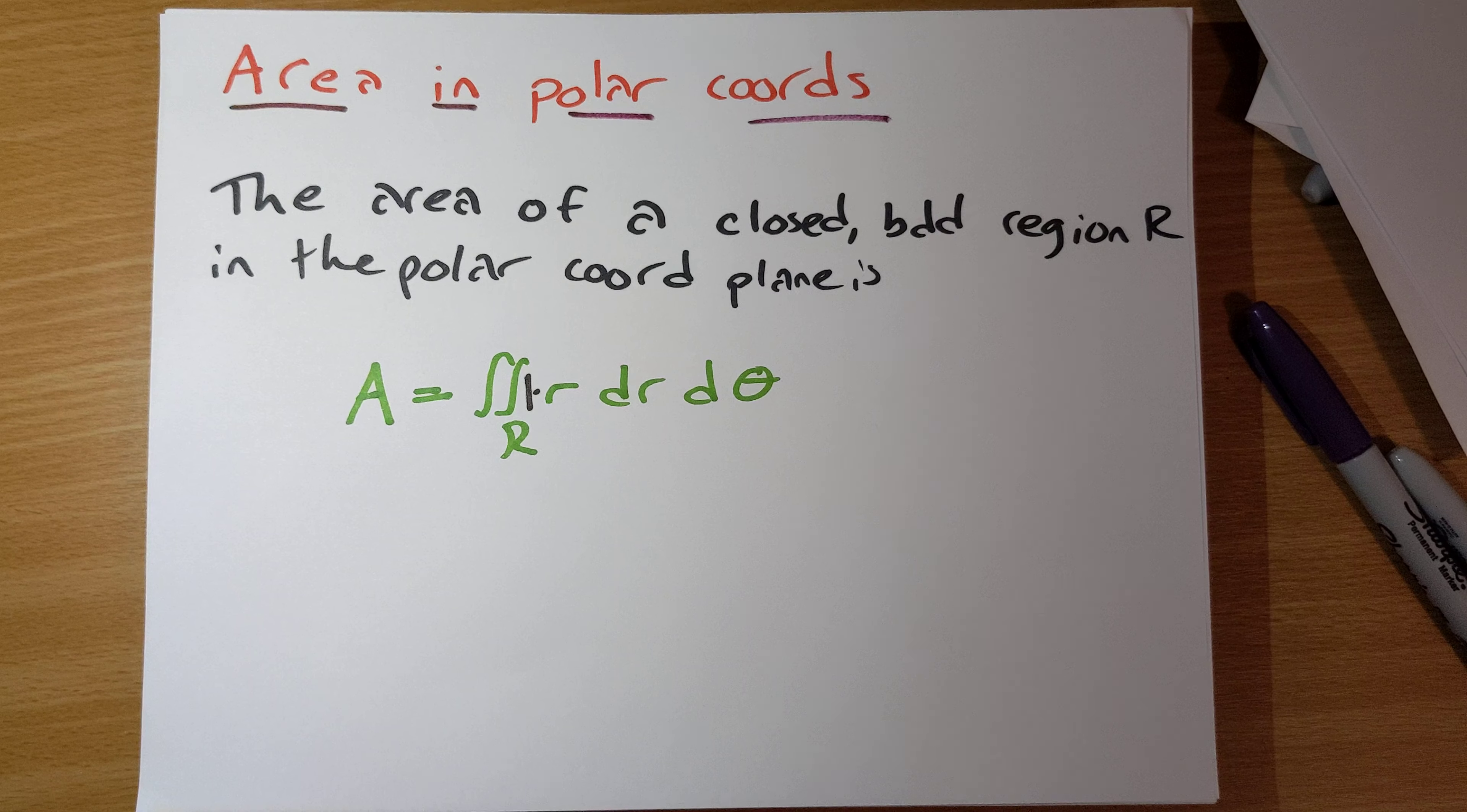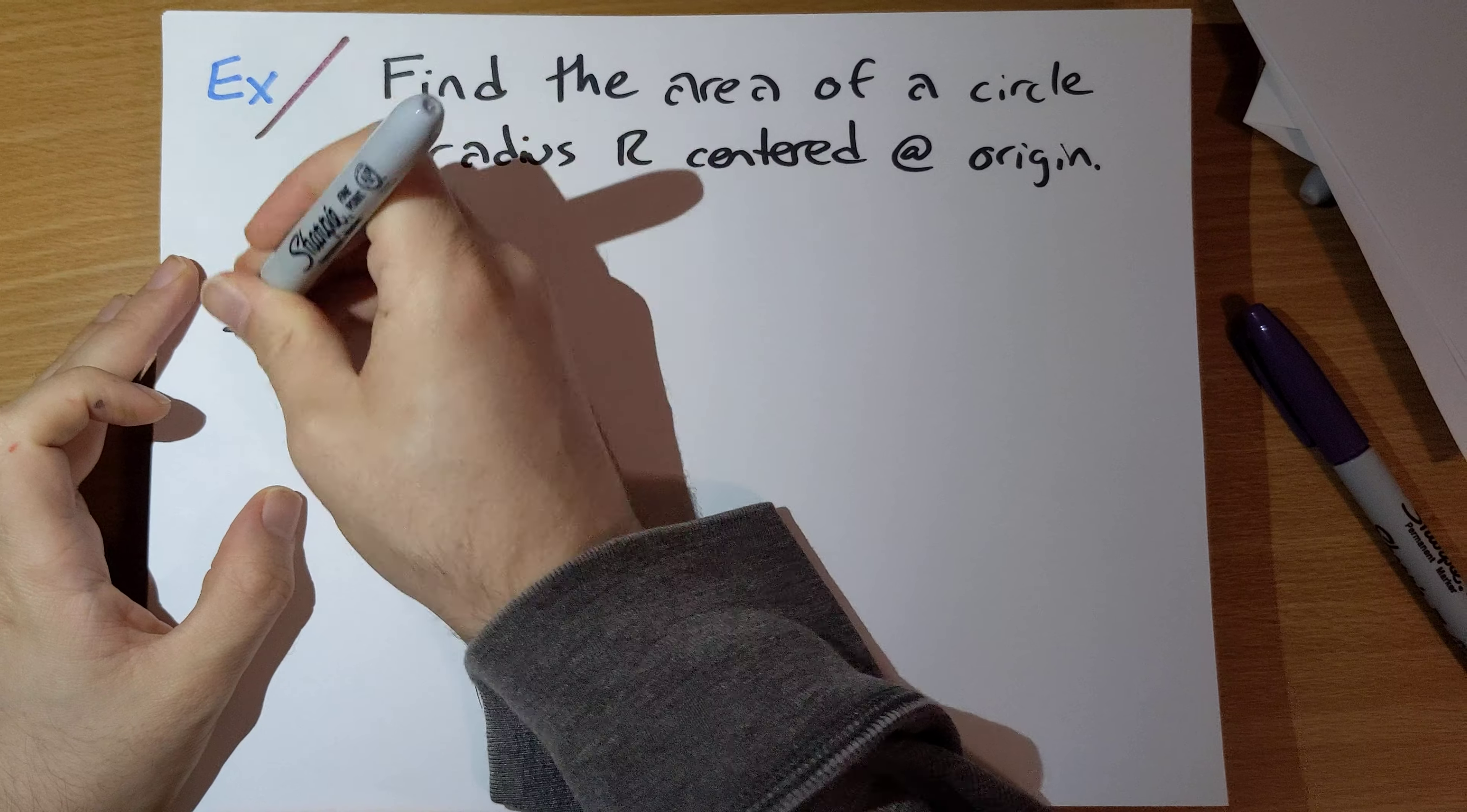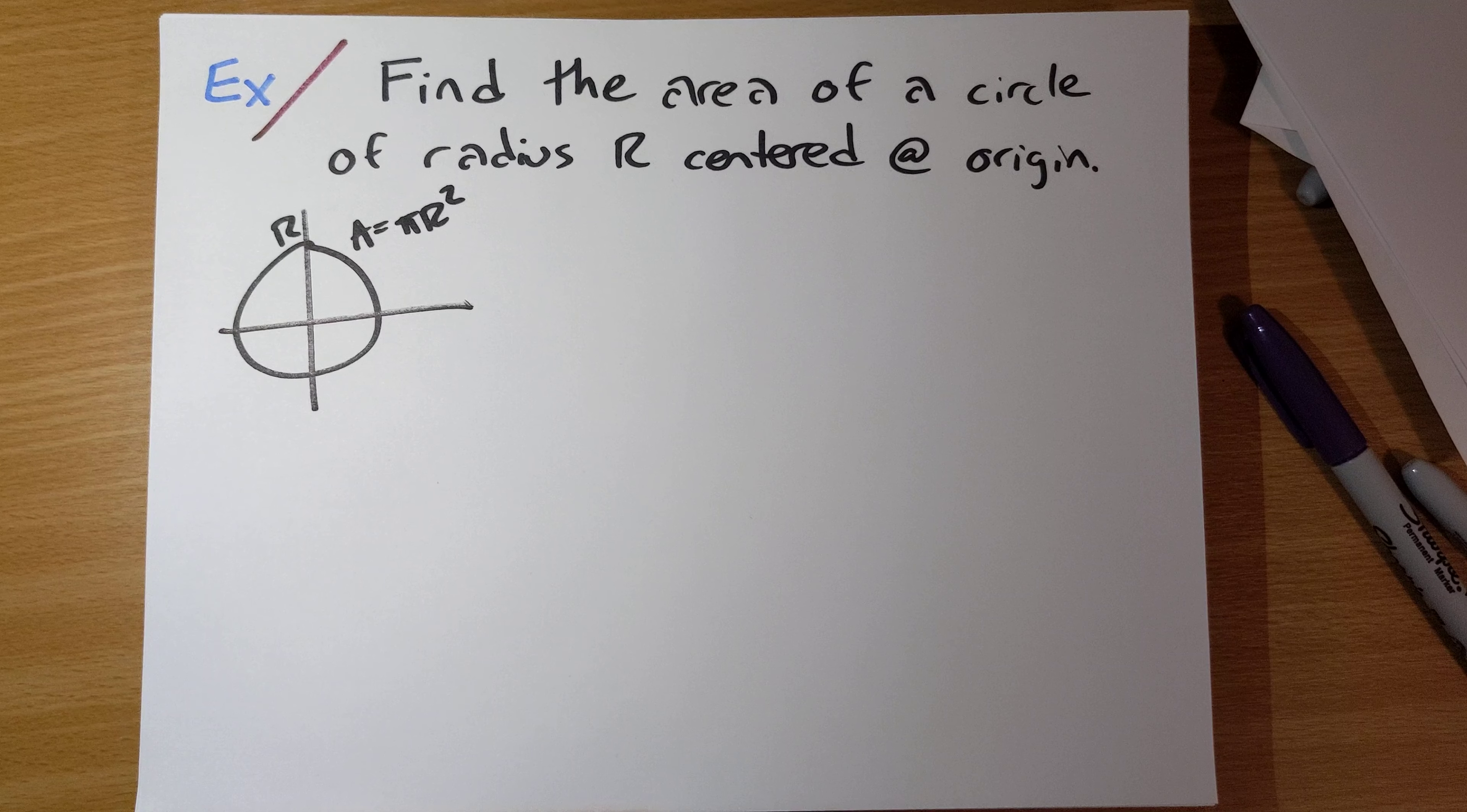Find the area of a circle of radius R centered at the origin. Obviously this is a very easy question. We know here is our circle of radius R. We know the area needs to be π times R squared. But let's solve this problem using polar coordinates integration and we'll see that everything checks out.